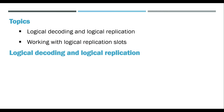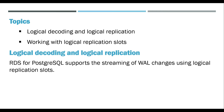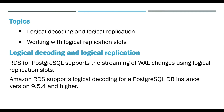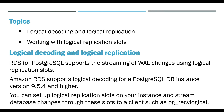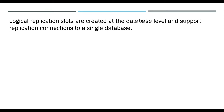RDS for PostgreSQL supports the streaming of file changes using logical replication slots. Amazon RDS supports logical decoding for a PostgreSQL DB instance version 9.5.4 and higher. You can set up logical replication slots on your instance and stream database changes through these slots to a client such as pg_recvlogical.